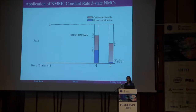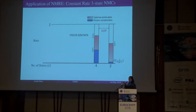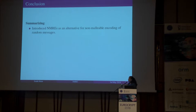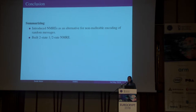Also in this work, we give an application of NMREs. Recall we did not have any constant rate non-malleable codes for T less than 4, and there was a gap between T equal to 2 and T equal to 4. In this work, we bring this gap down by constructing a one-third rate three-state non-malleable code, using the half-rate NMRE as a black box.